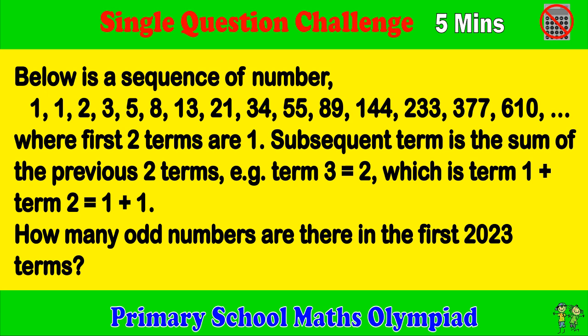Below is a sequence of numbers where the first two terms are 1. Subsequent term is the sum of the previous two terms, for example term 3 equals 2, which is term 1 plus term 2 equals 1 plus 1.